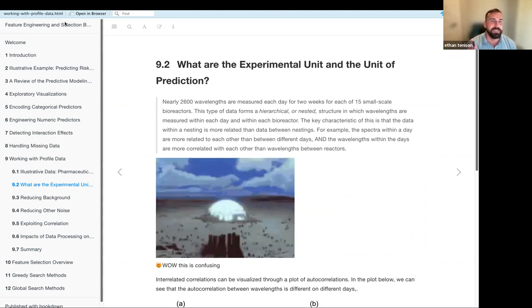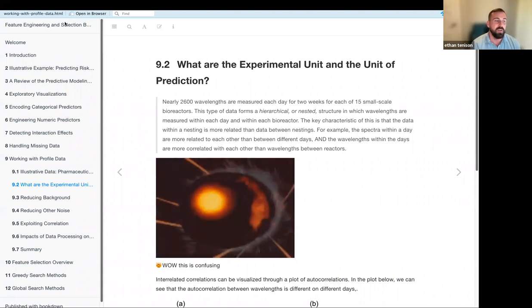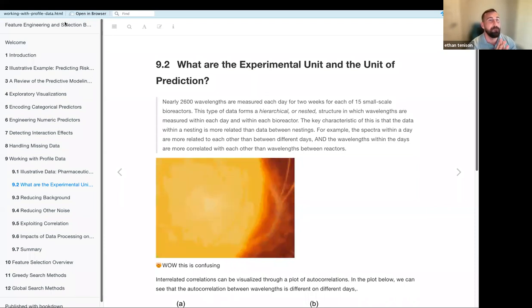One thing that they repeat over and over in this chapter is that when working with profile data, it's really important to understand what your experimental unit is, what your unit of analysis is for your prediction. Because in this data set, you could try and predict the intensity on a specific day, for example. But that's not good because all of the wavelengths within our reactor are going to be correlated with each other. And so this will lead to biased results.